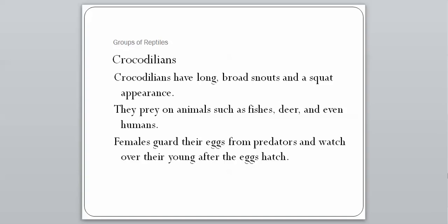Our second group is the crocodilians. Crocodilians have long, broad snouts and a squat, compact appearance. They prey on animals from fish to deer, and can even eat humans in rare cases. Females will guard their eggs from predators and watch over the young after the eggs hatch. Members of this group are some of the most fierce parents imaginable — you would never want to go near an alligator or crocodile nest because the mother is most likely very nearby and will defend them fiercely.